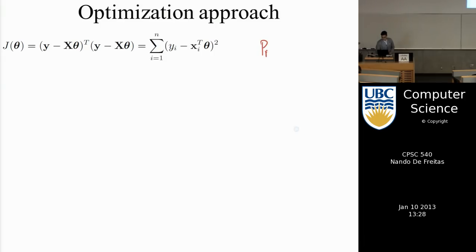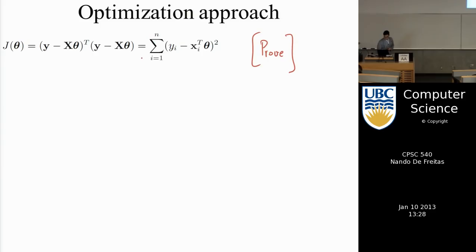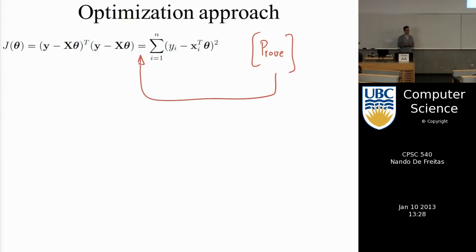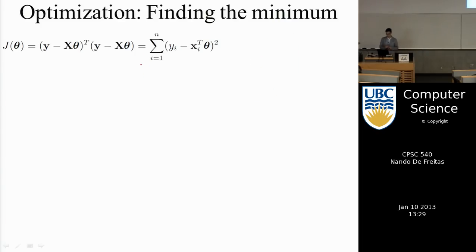Homework exercise: expand the vector y and the matrix X and convince yourself that the matrix form equals the component-wise sum. I want you to get used to the notation quickly, because an important part of machine learning research is being able to take data and write it in terms of matrices — the code is always written in terms of matrices, whether in MATLAB or Python.